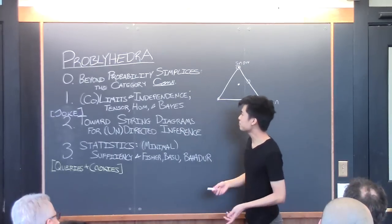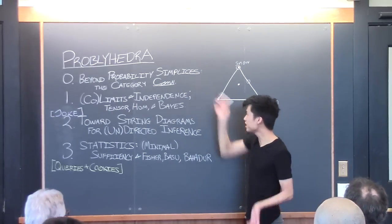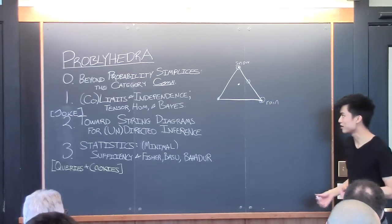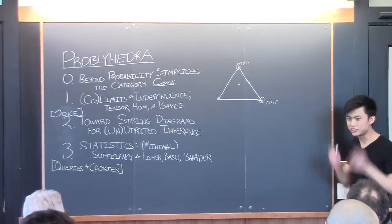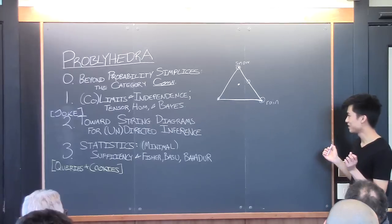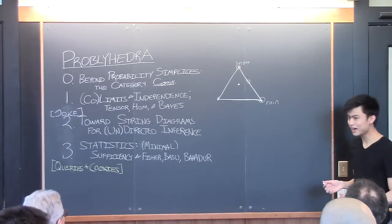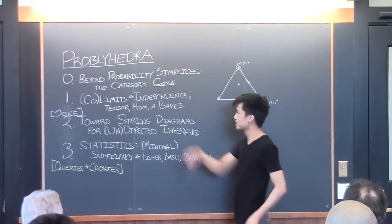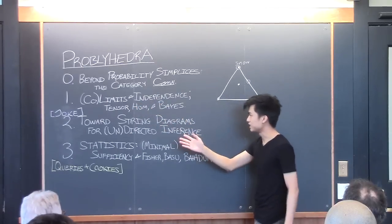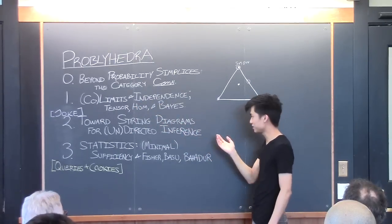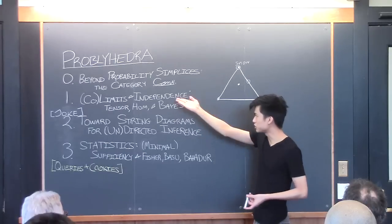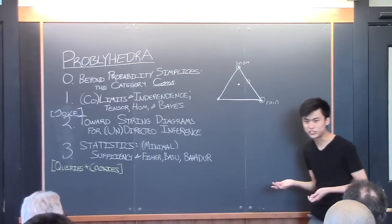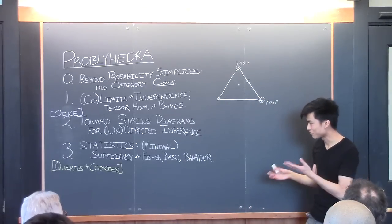We'll proceed in four steps. First I'll introduce you to this category we'll work in — I'll call it Conv. We saw before, I think two weeks ago with Brendan, that Conv is just the Eilenberg-Moore category over the monad Dist, but we don't have to think about it that way. Then we'll show that it has all limits and colimits, has an internal hom and a tensor adjoint to that, and using these ideas we can express a notion of independence and a notion of Bayes' theorem — we'll just force Bayes' theorem to be true by definition.